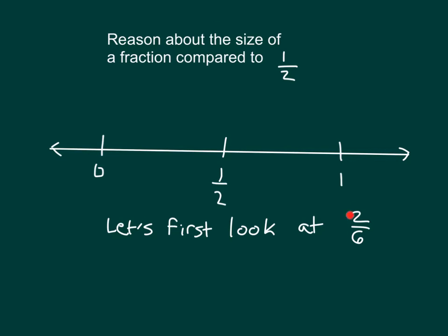Is 2/6 more or less than one-half? It helps us to think about the number of sixths in a whole. 1 does equal 6/6, 0 would be 0/6. And one-half would be equal to 3/6. We could multiply the numerator and denominator by 3. So if this is 0/6, this is 3/6.